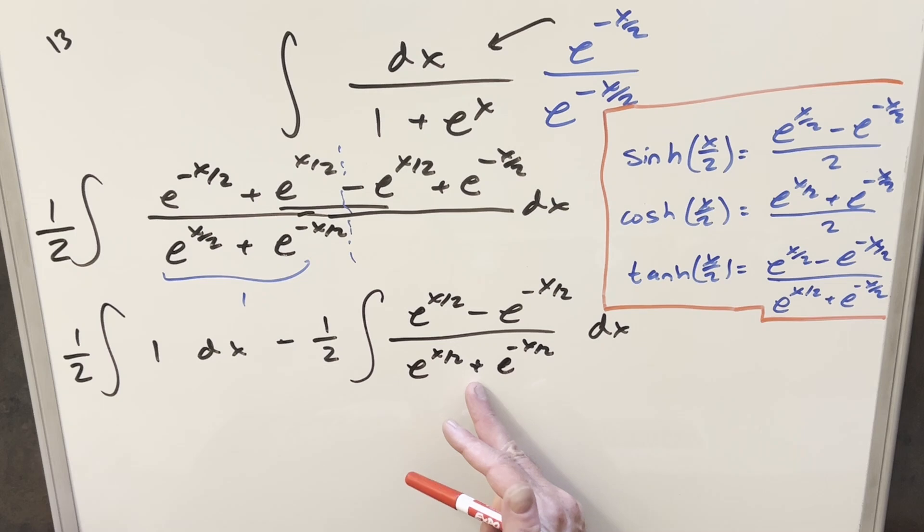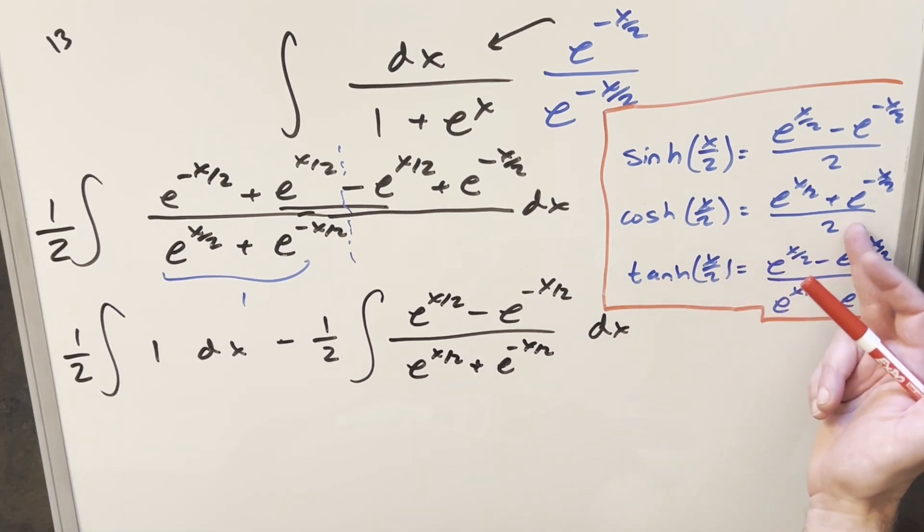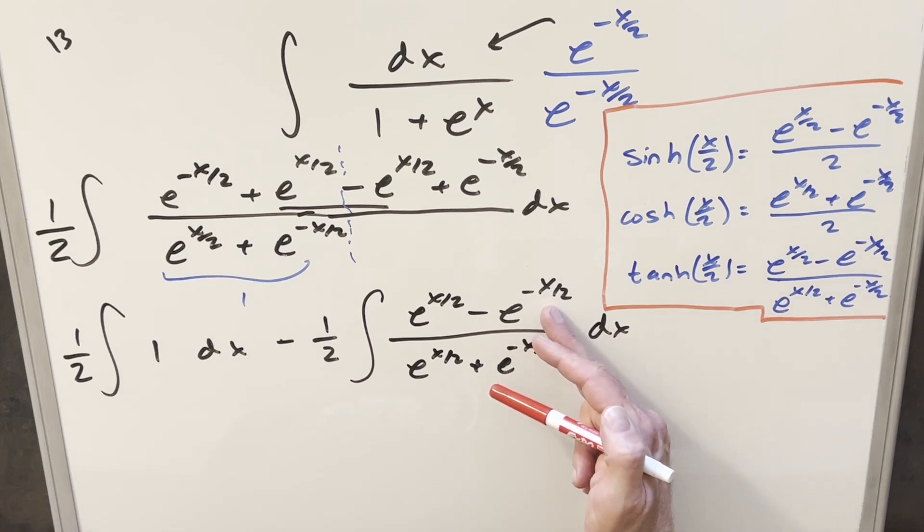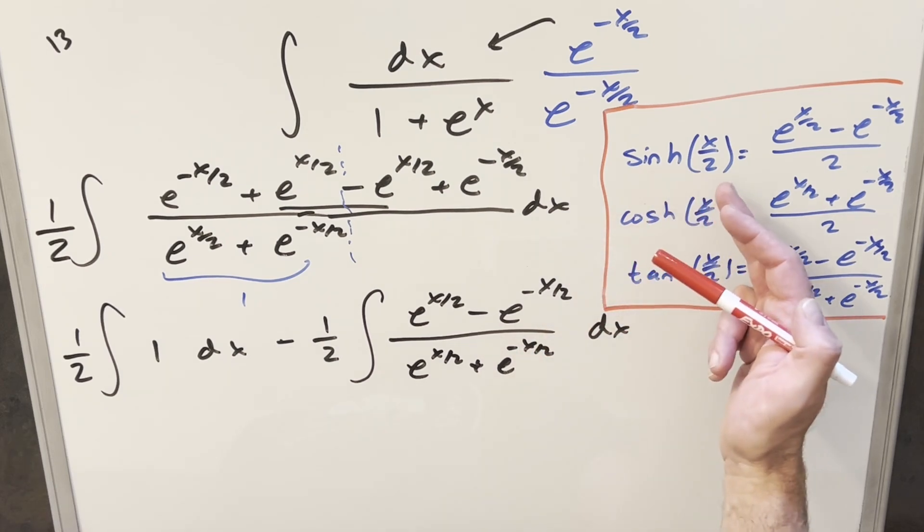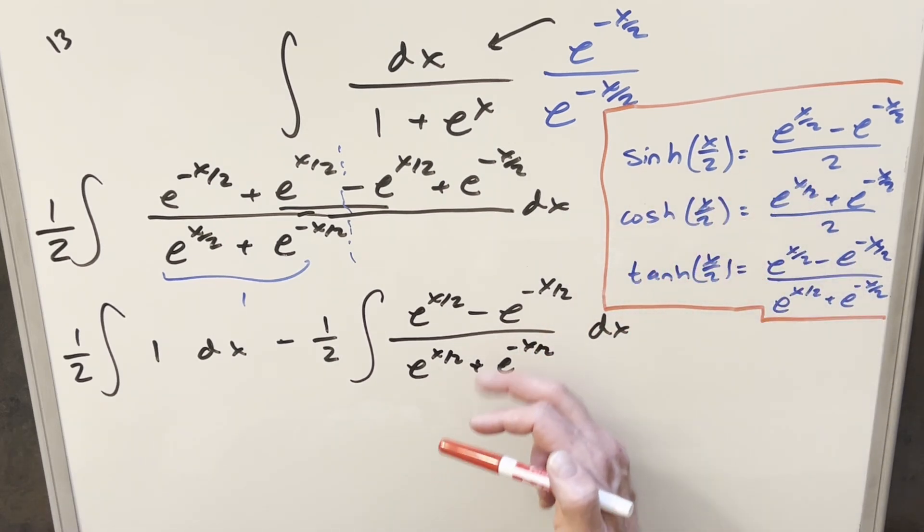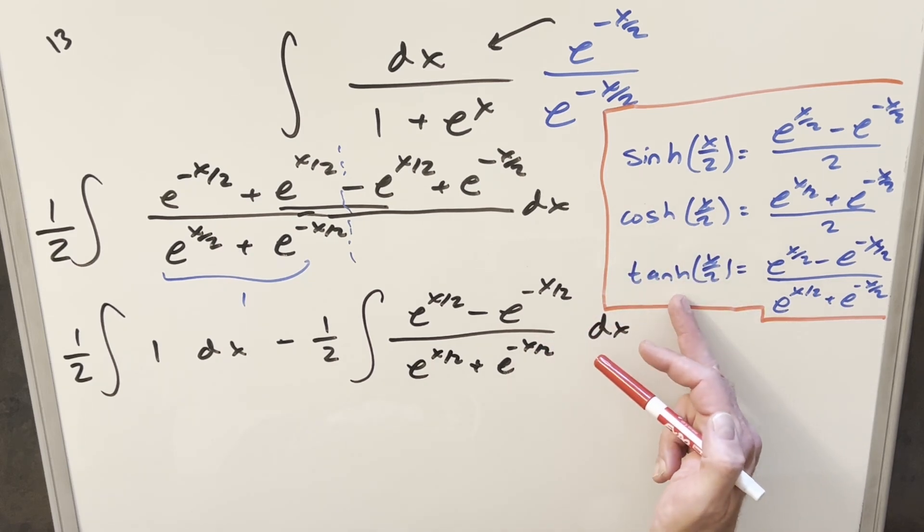And then with this integral right here, we can go back to our definitions. Like I said earlier, the denominator is a lot like cosh, but we bring up the 2. The same thing with the numerator. It's a lot like our definition for sinh x over 2. So putting this together with sinh x over 2 over cosh x over 2, what you end up with is tanh x over 2, and that's exactly what we have right here.